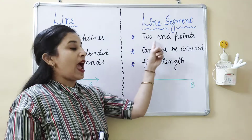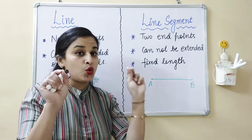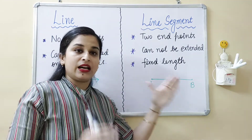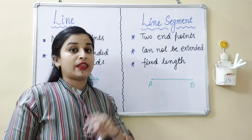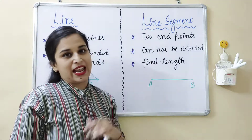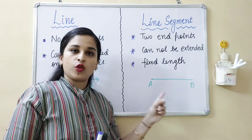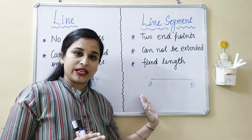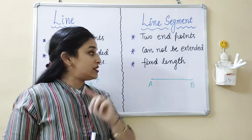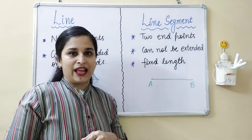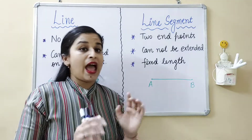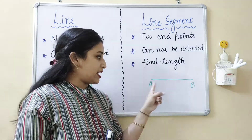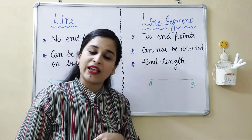What are the specifications of a line segment? First, a line segment has two end points — you can see A and B are the end points. Second, it cannot be extended, because it finishes at point A and point B. Third, it has a fixed length. We can measure AB with a scale because it has end points, so it has a fixed length.